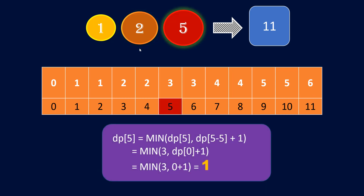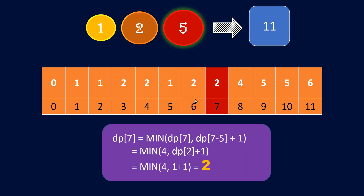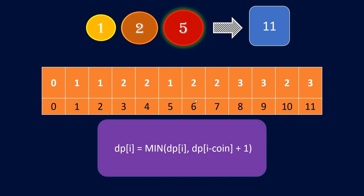Now let's go to coin 5. We start at index 5, the first point where we can use that coin. The minimum at position 5 is either 3 (from coins 1 and 2) or 1 (just using coin 5), so we update it to 1. For 6, it is minimum of 3 or dp[6 minus 5] plus 1, which is dp[1] plus 1 = 2. Similarly for 7 and beyond. Once all coins are processed, the answer is dp[amount]. If dp[amount] is still greater than amount, that means the amount cannot be formed and we return minus 1.